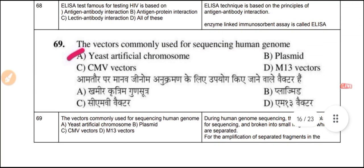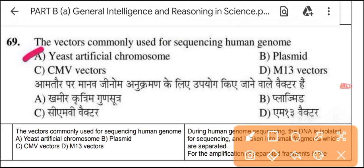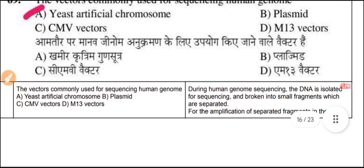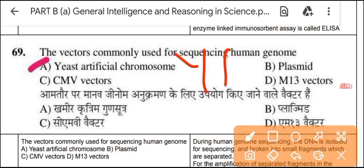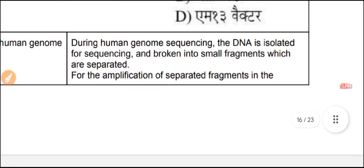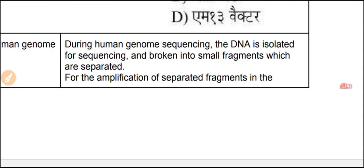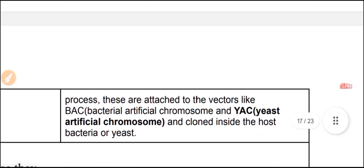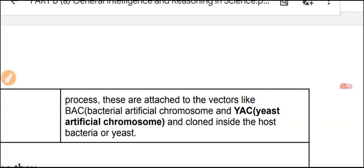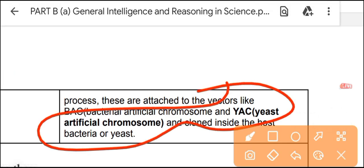The vector commonly used for sequencing the human genome is the YAC (Yeast Artificial Chromosome). During human genome sequencing, DNA is isolated, broken into small fragments, and separated for amplification. These fragments are attached to vectors such as BACs (Bacterial Artificial Chromosomes) and YACs (Yeast Artificial Chromosomes), then cloned inside a bacterial or yeast host.